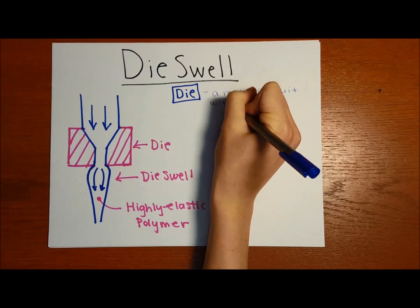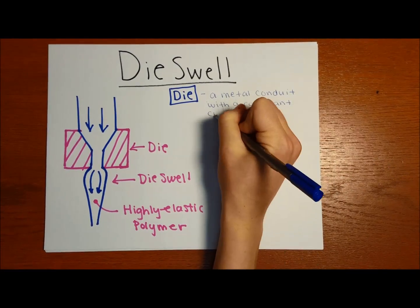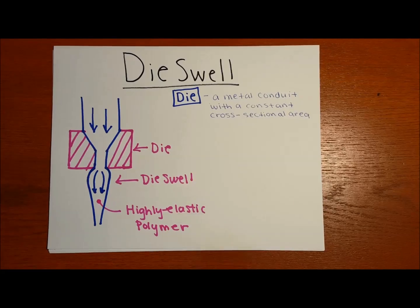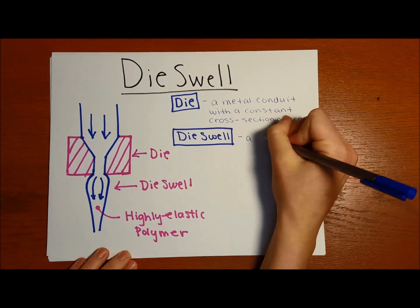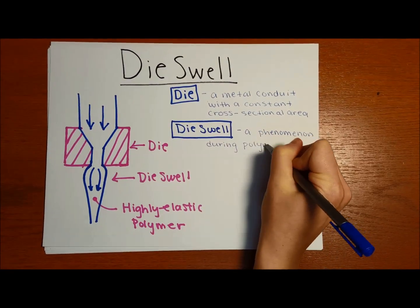Die-swell is when the fluid exiting the narrow conduit has a larger diameter than the conduit itself. Die-swell occurs when a highly elastic polymer flows through the die, as you will see in the following experiment.